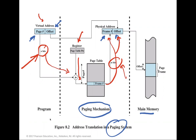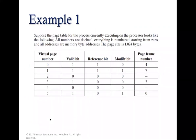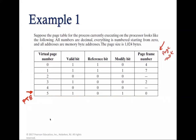Now let's discuss examples of address translation in virtual memory. Suppose the page table for the currently executing process is given. In this virtual page table, each entry contains a virtual page number, a valid bit indicating accessibility, a modified bit indicating whether the page has been changed, and the corresponding frame number in real memory. For example, virtual page number 0 has valid bit set and is assigned to frame number 4.